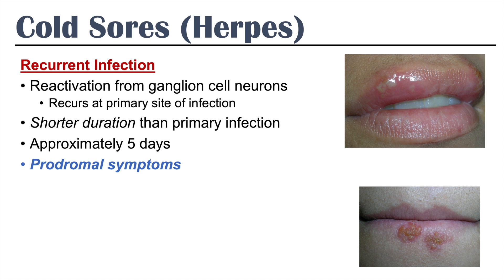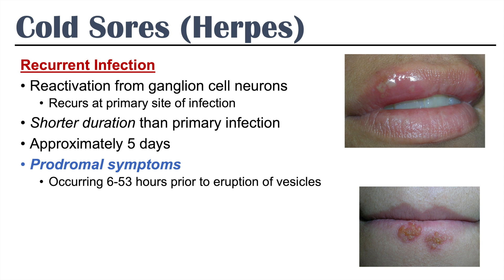A lot of times people will report prodromal symptoms — you start feeling something before the onset of the cold sore. About six to 53 hours prior to eruption of the vesicles, you may have a feeling of burning, tingling, itchiness, pruritus, or pain in that area. You can just feel something coming on with your lip.